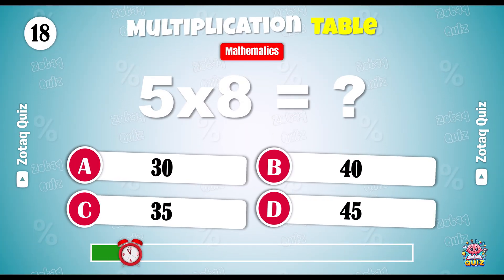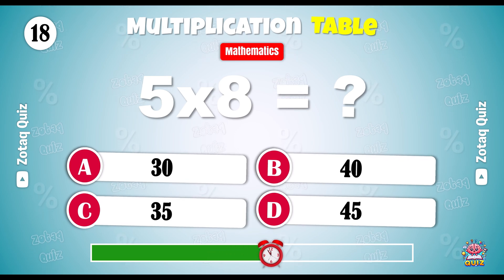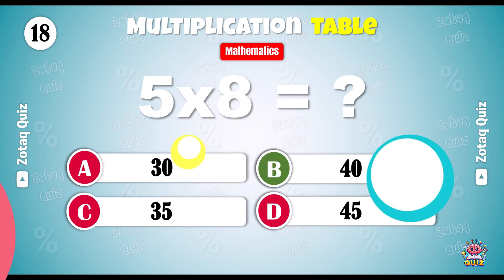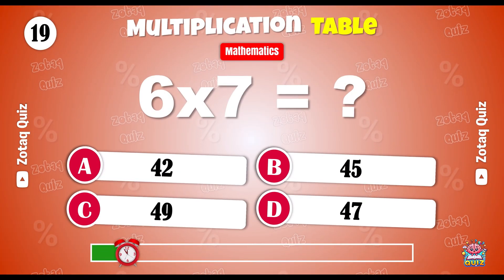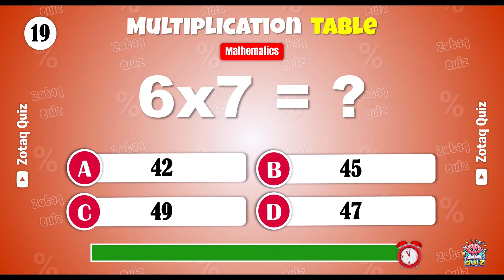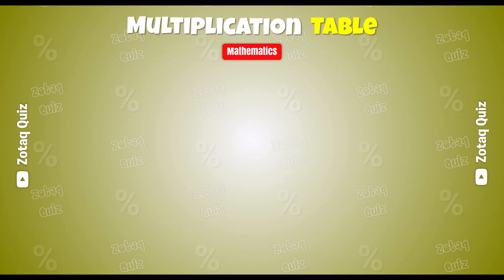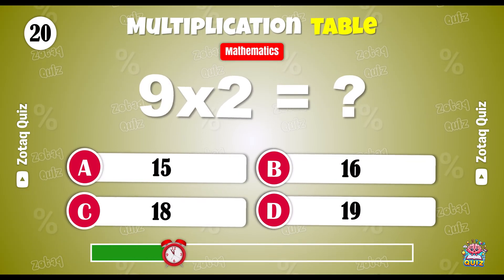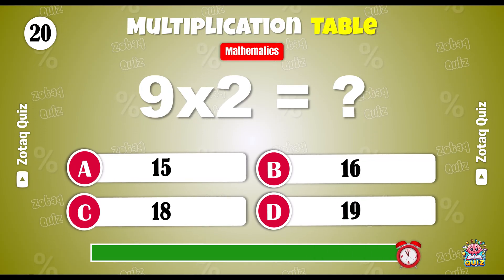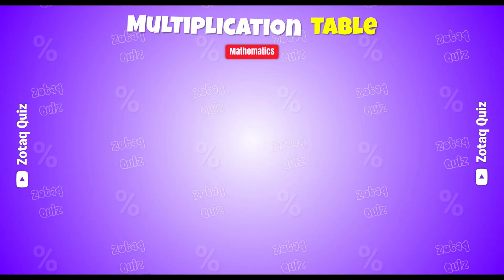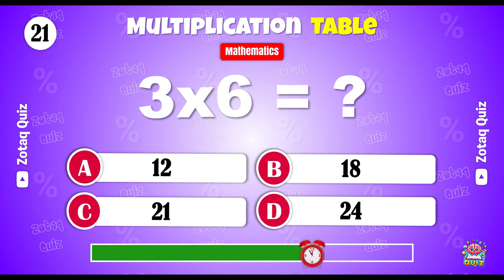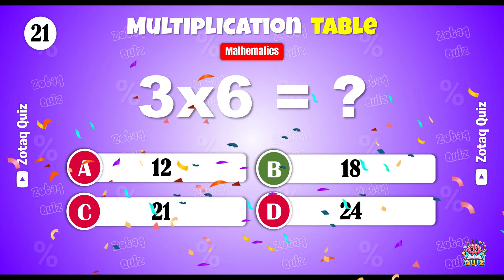Solve this. 5 x 8. 40 is the right answer. 6 x 7. Which one is correct? 42 is the correct answer. Which one is the right answer? 9 x 2. 18 is the right answer. Now solve this question. 3 x 6. 18 is the right answer.